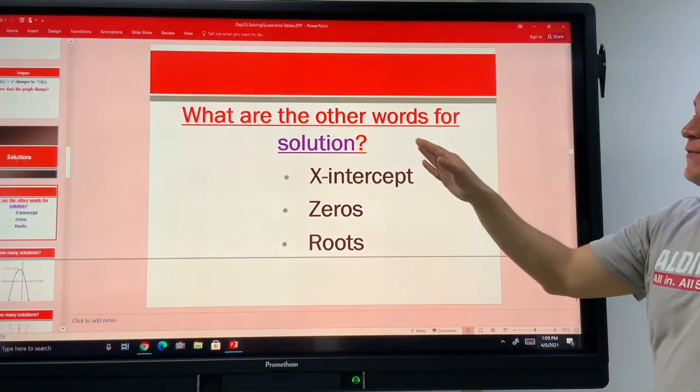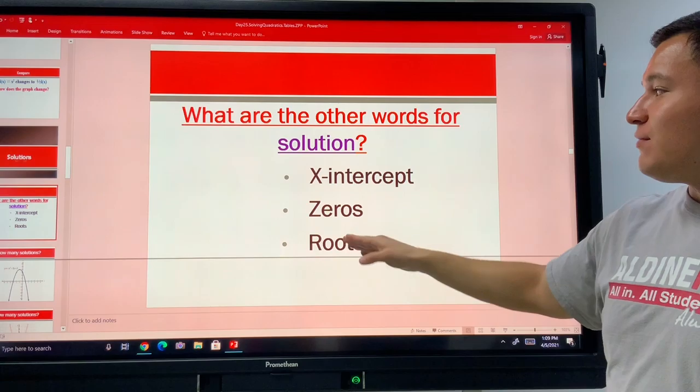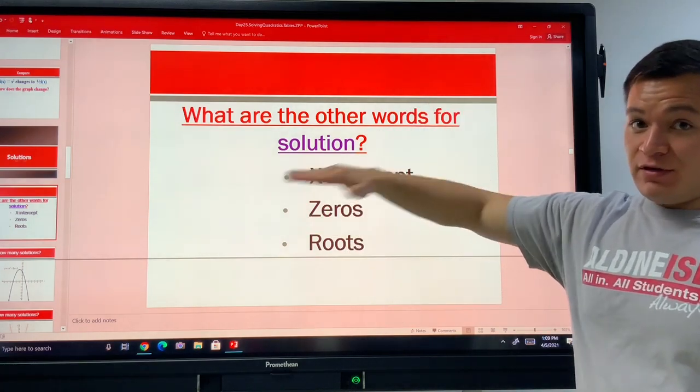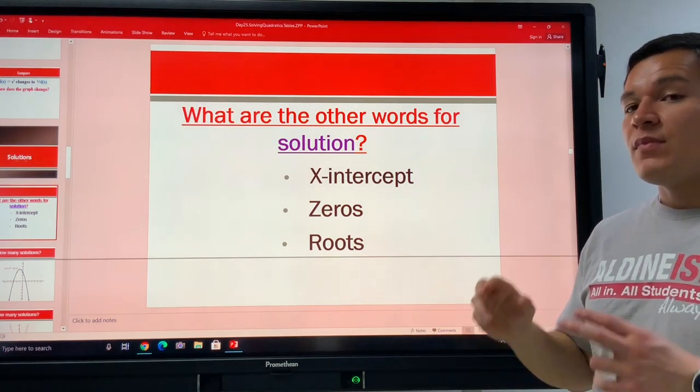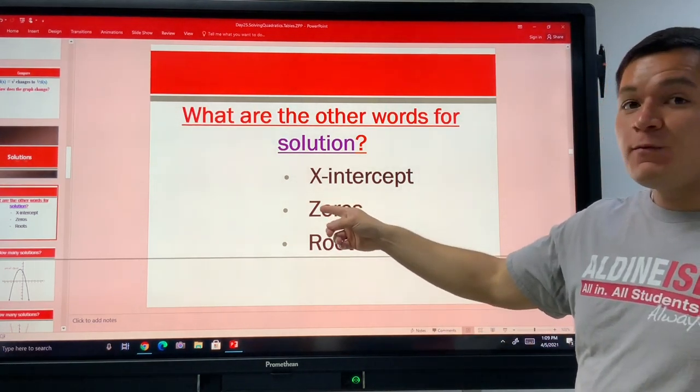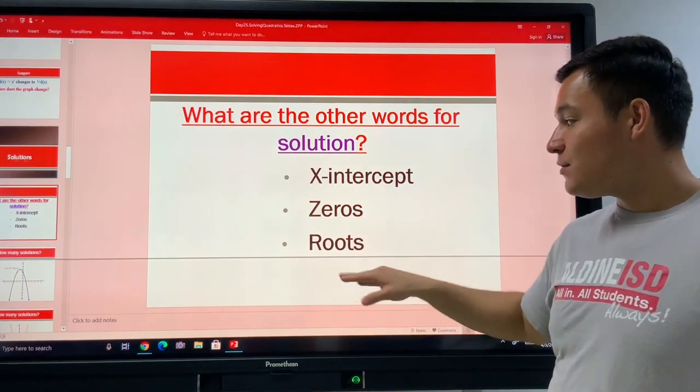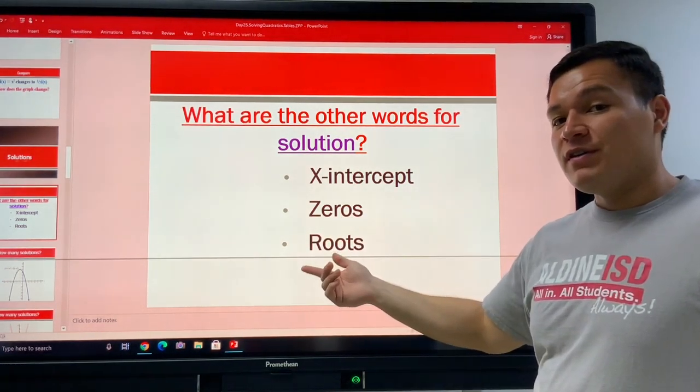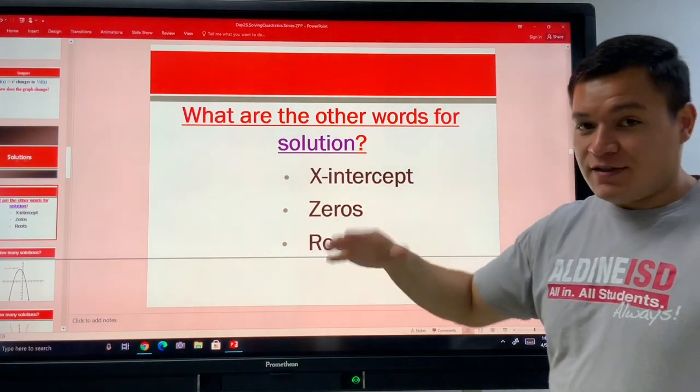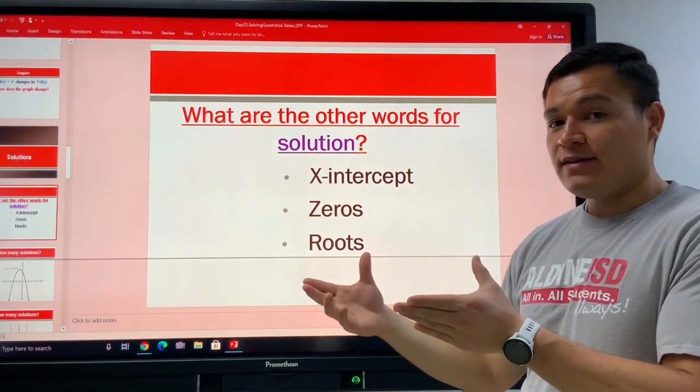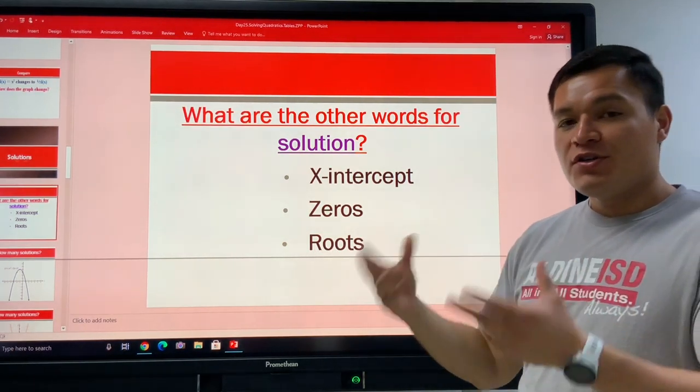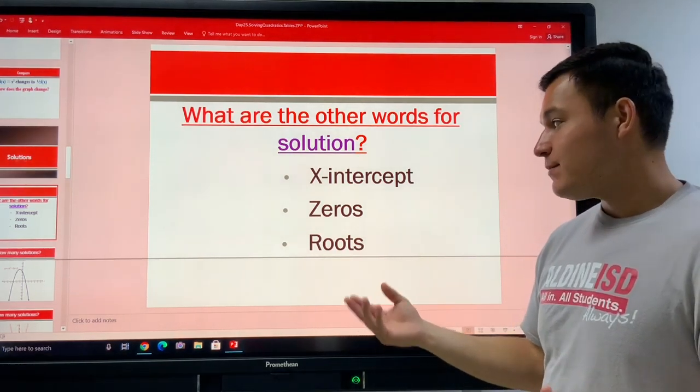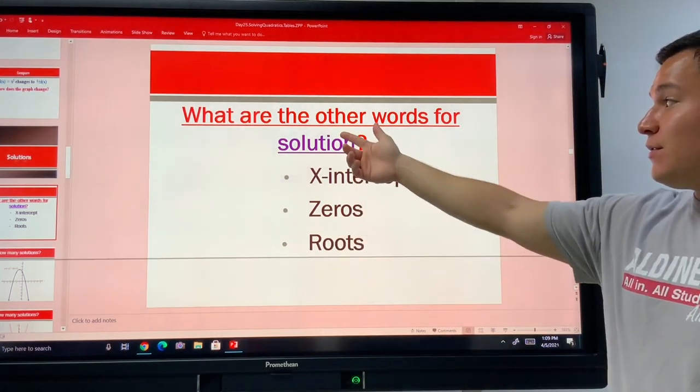If you remember, there are other words for solutions. We have x-intercepts, we have zeros, we have roots. X-intercepts are when a parabola touches the x-axis. Zeros are whenever you plug in zero for y in the quadratic equation. If you plug in zero for y and solve for x, you're solving for the zeros. The roots are another word for the x-intercept. It's just, if you have a graph, where is it touching the x-axis? Or what could you plug in for x to get zero for y? So roots are just another common word for these other three things.